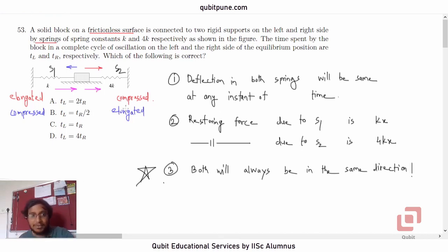The force will be again in the same direction. Of course, its magnitude will be 4 times that of S1 due to S1. So, because the force will always be in the same direction, that basically tells us that it is a simple harmonic motion. And we know for simple harmonic motion, the time spent on either side of the main position is the same.